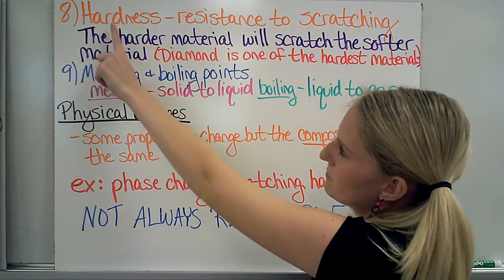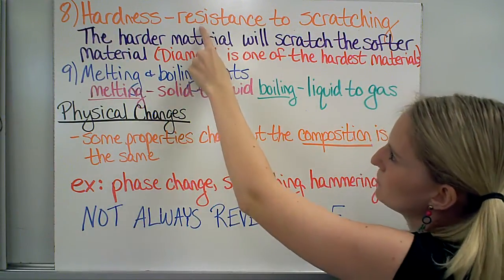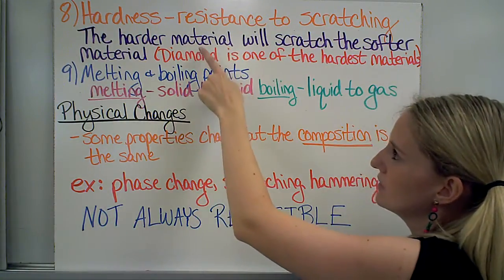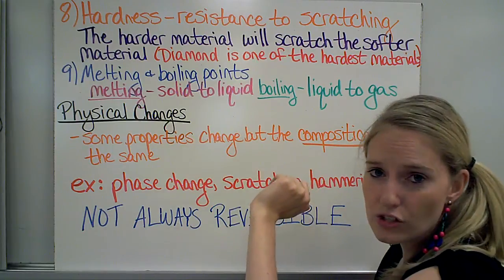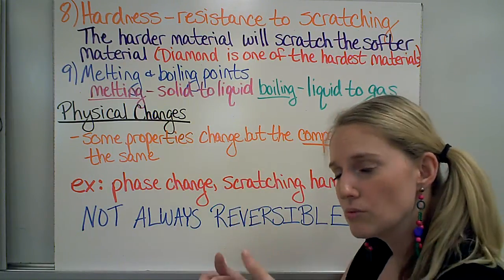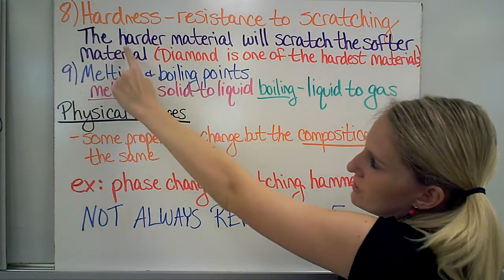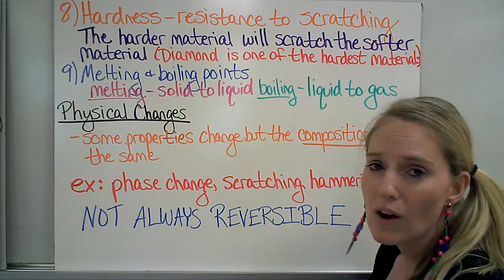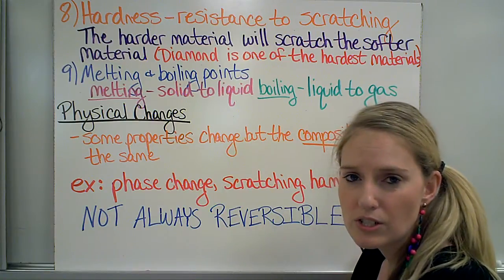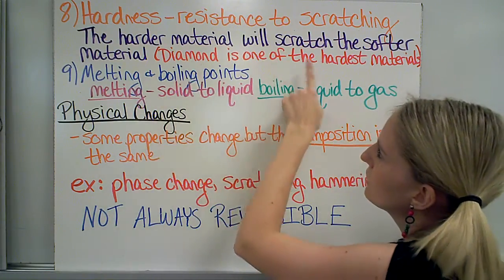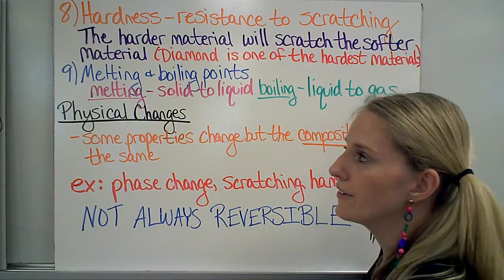More physical properties. One of them is hardness, which is an object's resistance to scratching. So the harder a material is, the more likely it is to scratch something else. So if I have two materials and one scratches the other, the one that does the scratching is the harder material and the one that is softer is going to be the material that ends up with a scratch on it. Diamond is one of the hardest materials that we have here on earth.